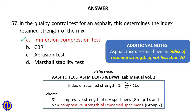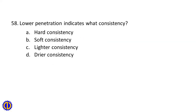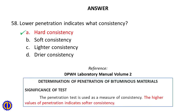Question 58: Lower penetration indicates what consistency? A. Hard consistency, B. Soft consistency, C. Lighter consistency, D. Dryer consistency. Answer: A. Hard consistency. Reference: DPWH Laboratory Manual Volume 2, Determination of Penetration of Bituminous Materials — Significance: The penetration test is used as a measure of consistency. Higher values of penetration indicate softer consistency.